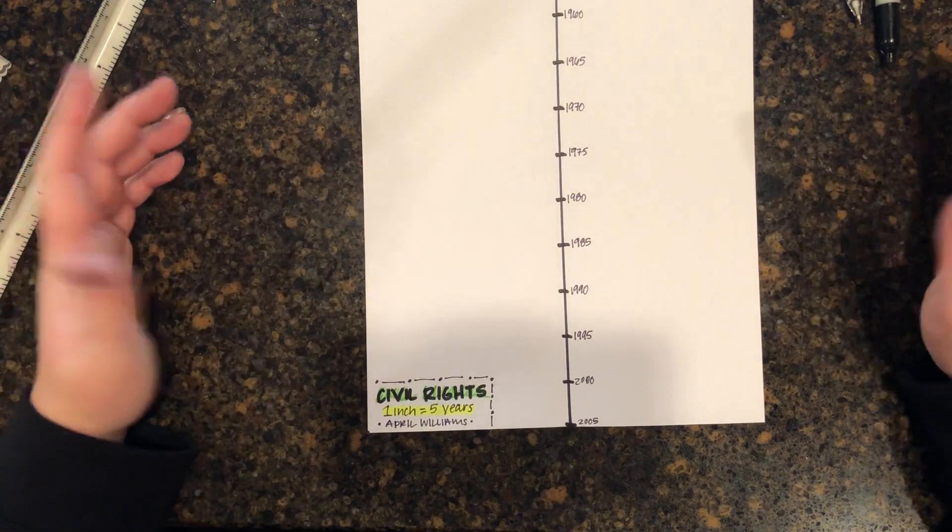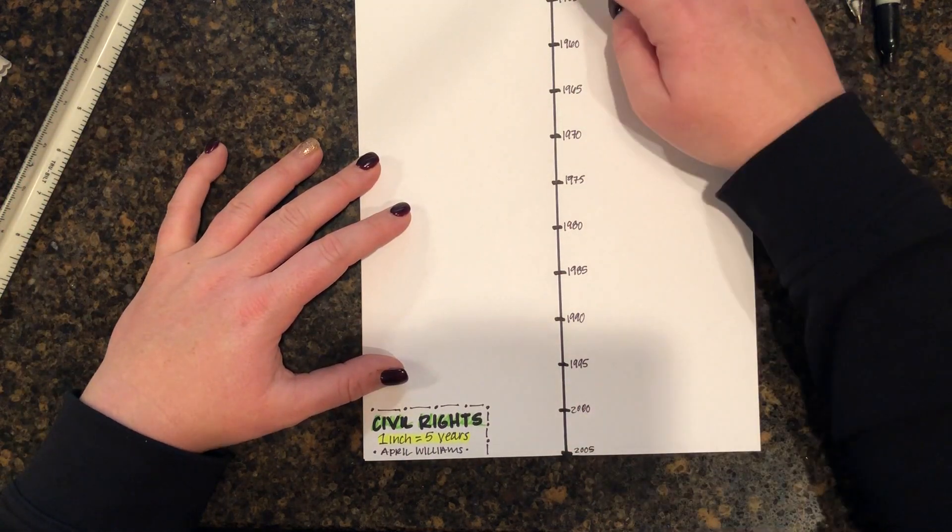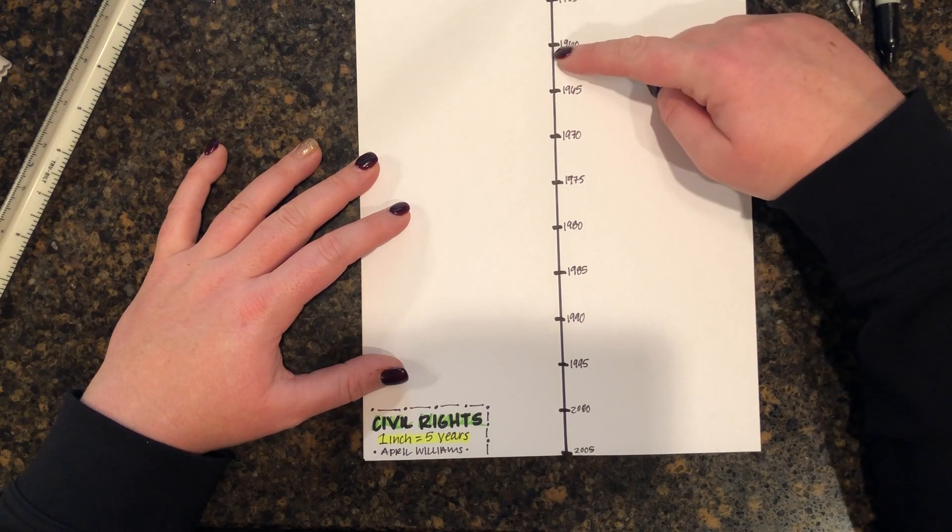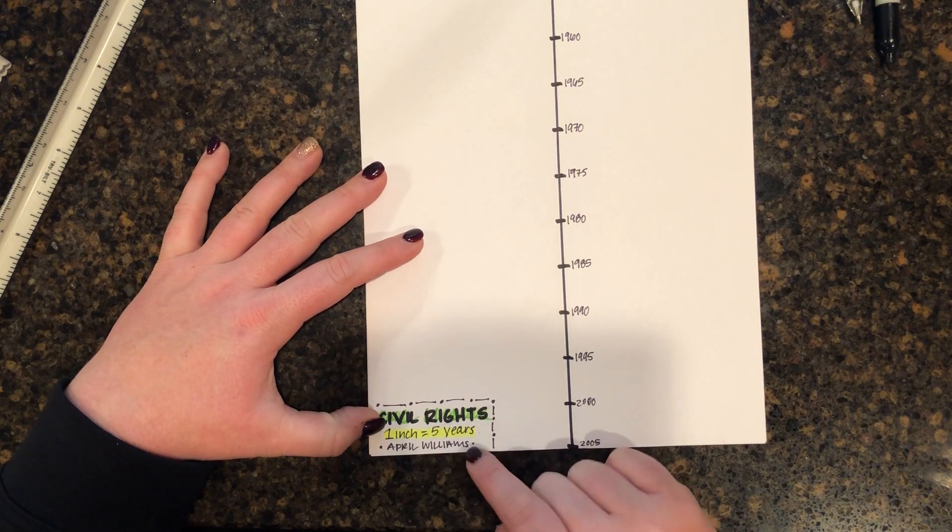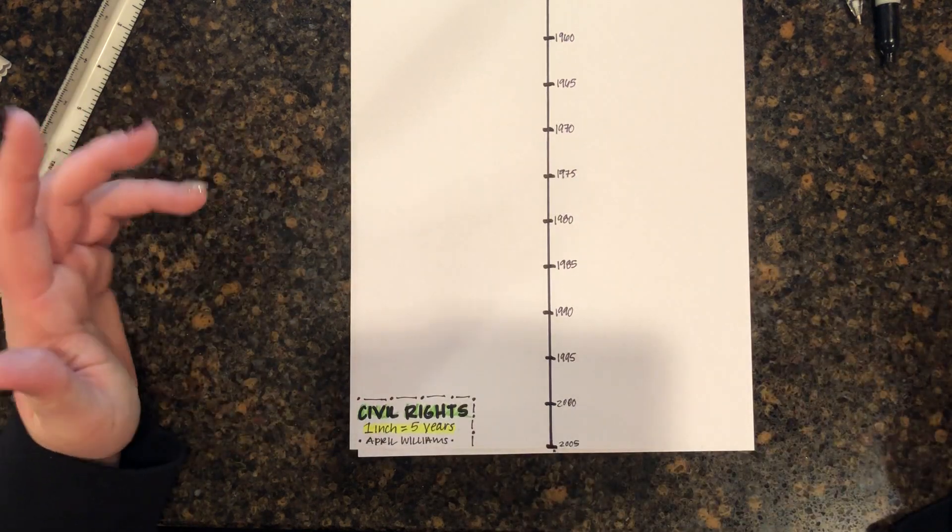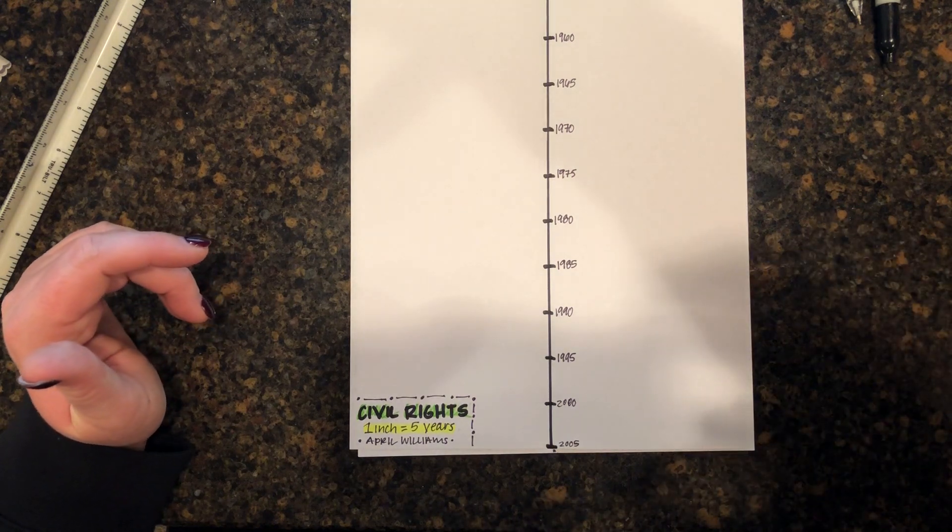So now my timeline is totally ready to go. I have all of the elements that I need. I have my timeline, I have my correctly spaced intervals, I have my dates, I have my title, I have my key, my interval, and I have my name. I'm good to go. All right guys, I hope this video helps. I'm looking forward to seeing what your timelines end up looking like.